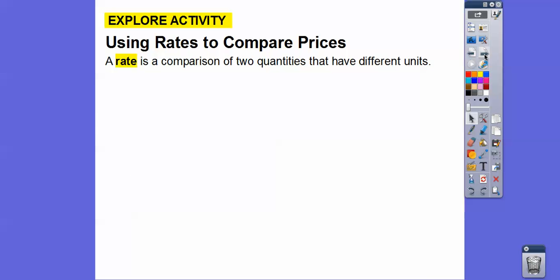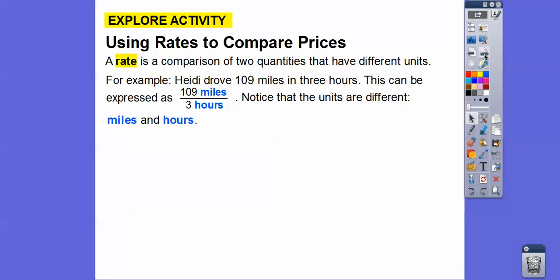Rates are a form of a fraction. A rate is a comparison of two quantities that have different units. For example, Heidi drove 109 miles in three hours. This can be expressed as a rate: 109 miles over three hours. We say this as 109 miles per three hours. Notice that the units are different — miles and hours.